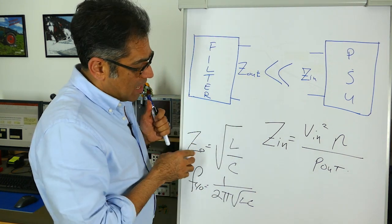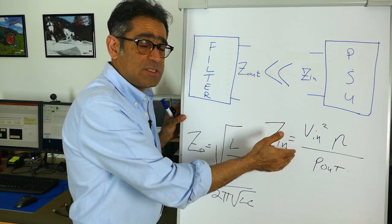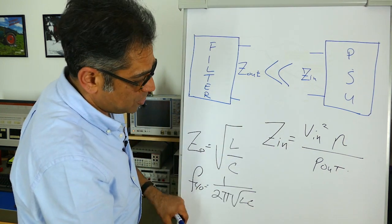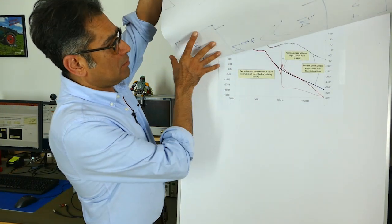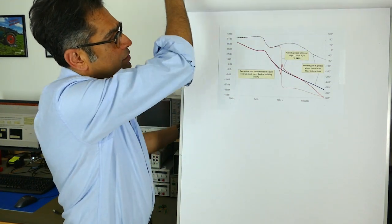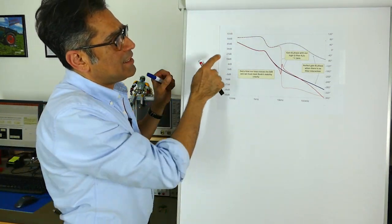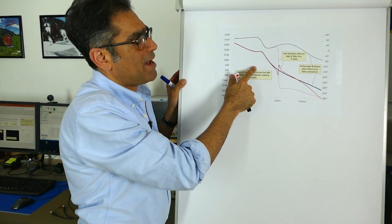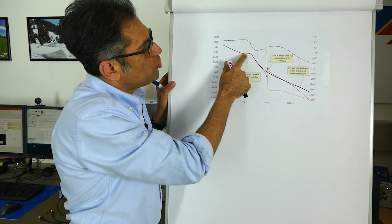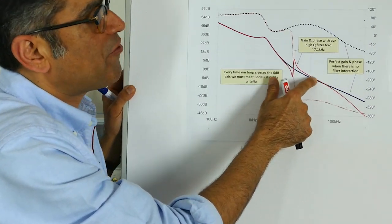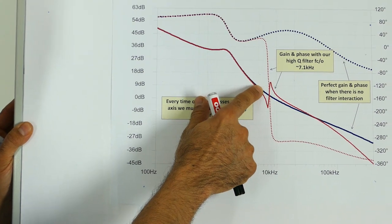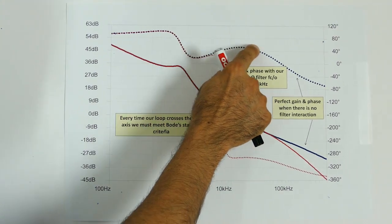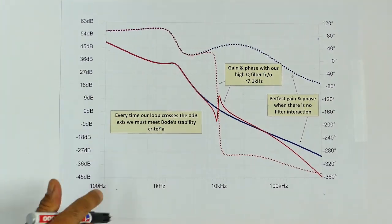So what happens if this Z_out gets close to Z_in? Well, I have done a simulation here. You see the classic Bode plot of a voltage mode power supply. This is a voltage mode buck converter. The blue trace is the loop before I have added the filter. You can also see the phase, it's all nice and beautiful exactly like you expect.